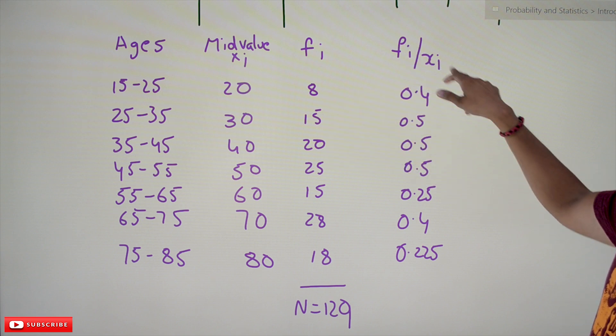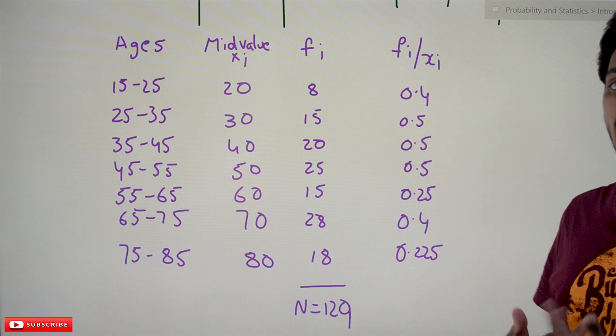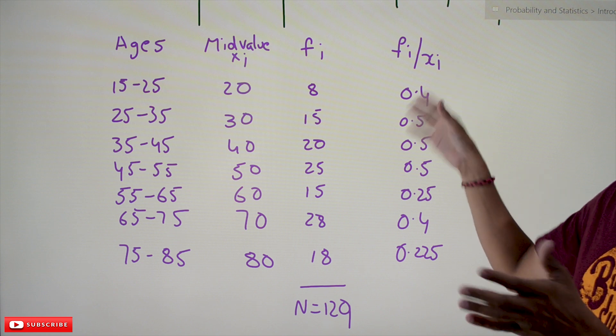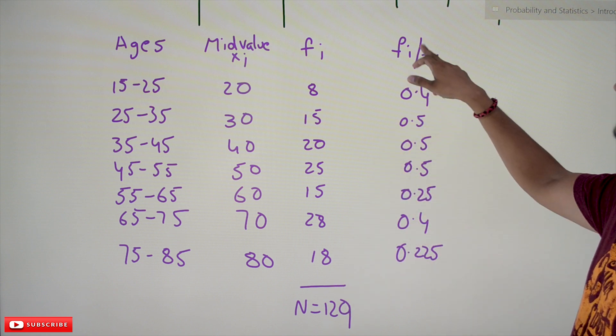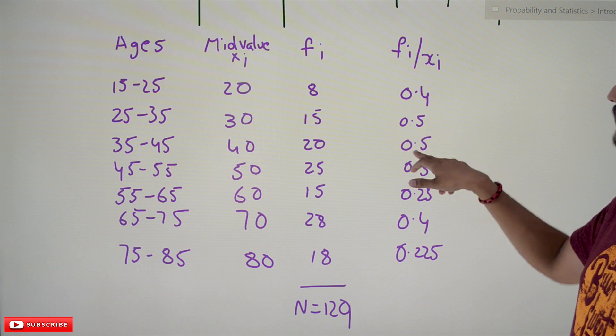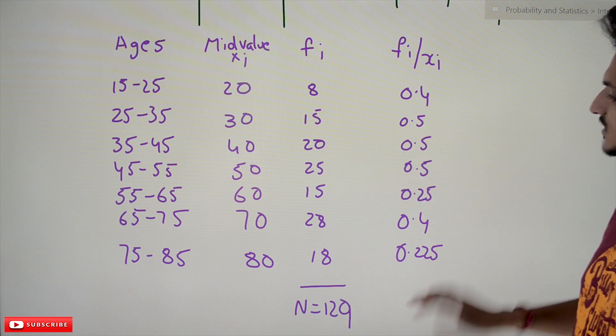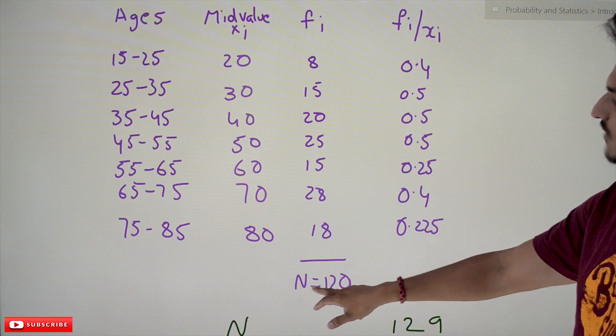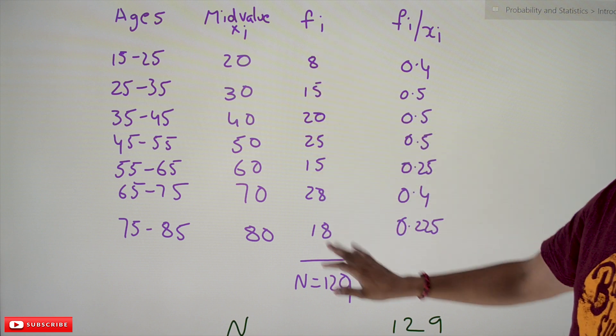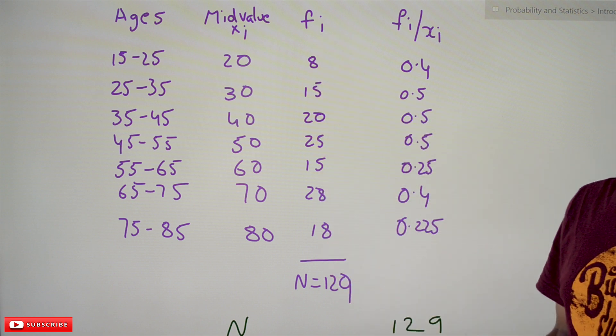FI by XI: this is 0.4, this is 0.5, 0.5. We calculated all these values. Now we are going to calculate N value, which means summation of all the frequencies. That equals 129. So total, how many inputs are there? 129 inputs, that is what this N says.